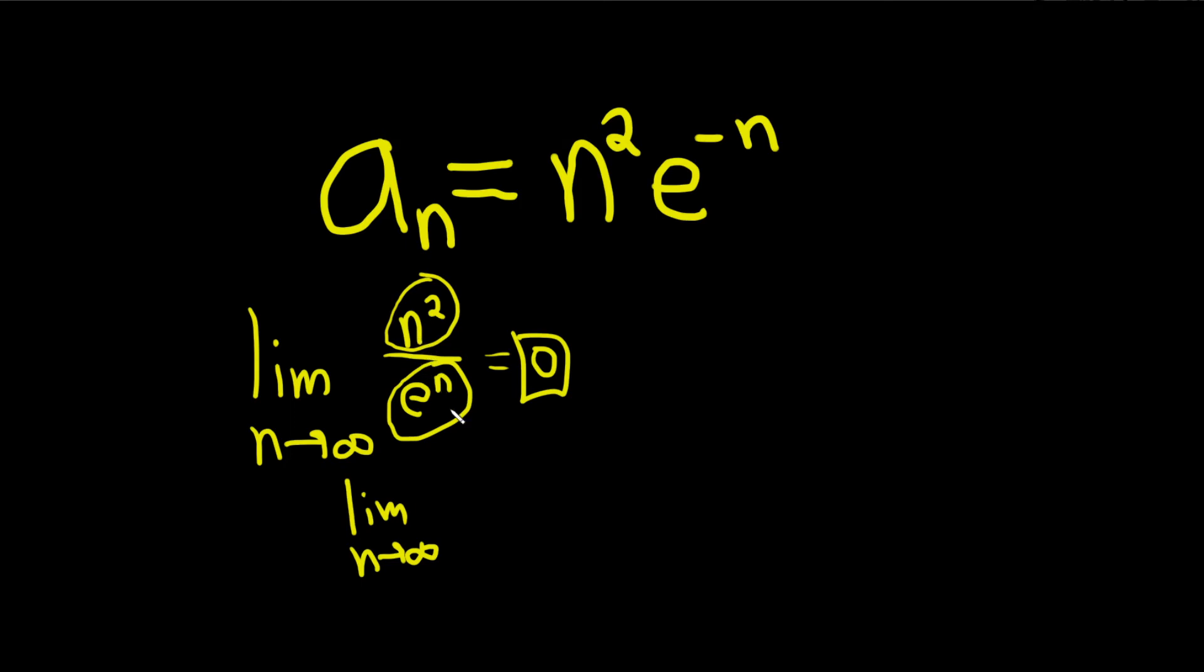If this is x squared and this is e to the x, we can certainly take the derivative. We get 2n and we have e to the n. And then we can do it again.